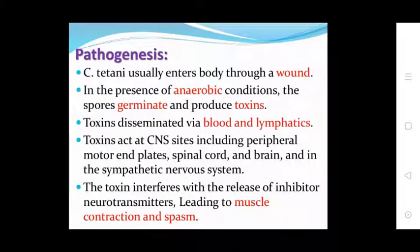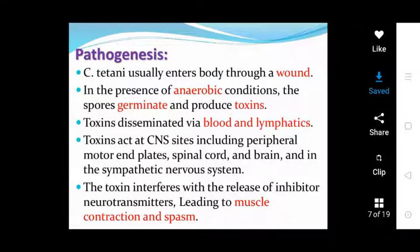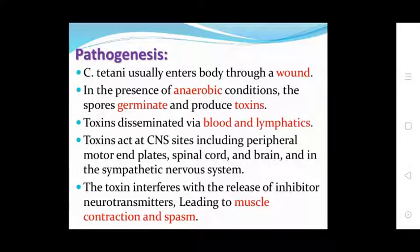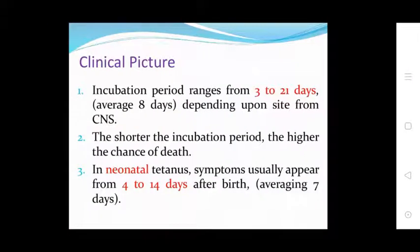Pathogenesis: C. tetani usually enters the body through a wound. In the presence of anaerobic conditions, the spores germinate and produce toxin. The toxin disseminates via blood and lymphatics. The toxin acts on CNS sites including peripheral motor neurons, the spinal cord, the brain, and the sympathetic nervous system.